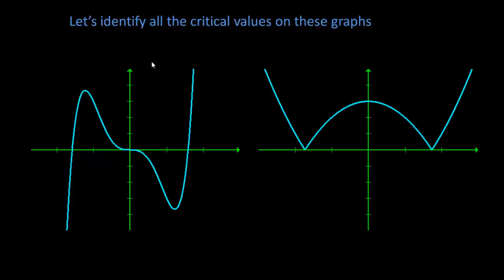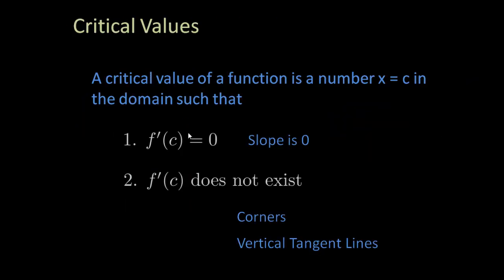Now let's identify all the critical values on these graphs. Again, recall that f prime of c is zero, that means slope is zero, or when the derivative doesn't exist, so at these two things: corners and vertical tangent lines.